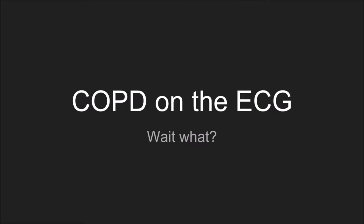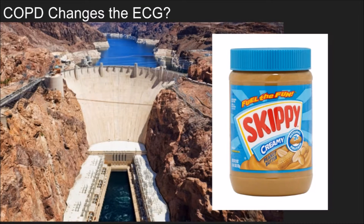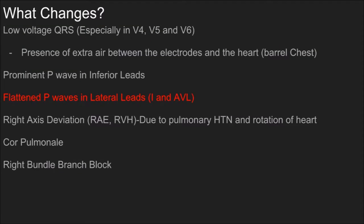Here's one not many people think about: the manifestations of COPD on the ECG. People say COPD changes the ECG — let me answer that with this small photo collage. What changes? We can see low voltage QRS complexes in some leads, especially V4, V5, and V6. There's often extra air between the electrodes and the heart in barrel-chested patients, which lowers the voltage of the QRS.